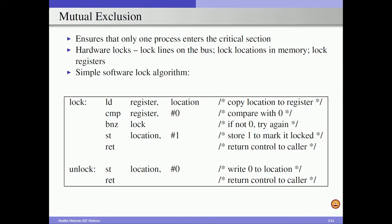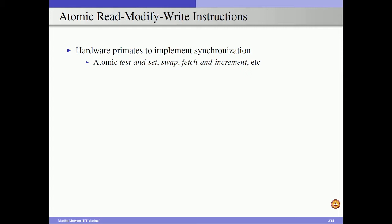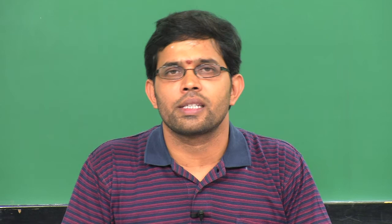In order to do that, we need atomic read-modify-write instructions in our ISA. We are dealing with hardware support to ensure synchronization. We need to look at what support we can get from the instruction set architecture to achieve mutual exclusion. We need read-modify-write instructions in our ISA so that whatever software routine we write for acquiring and releasing the lock can use these hardware primitives, achieving mutual exclusion.